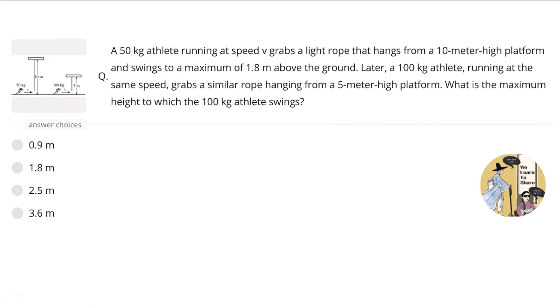A 50 kilogram athlete running at speed v grabs a light rope that hangs from a 10-meter-high platform and swings to a maximum of 1.8 meters above the ground. So we can see that there is an athlete with speed v, 50 kilograms, and then he is running like in this situation, and then he hangs up and the maximum height over here is 1.8 meters from the ground.